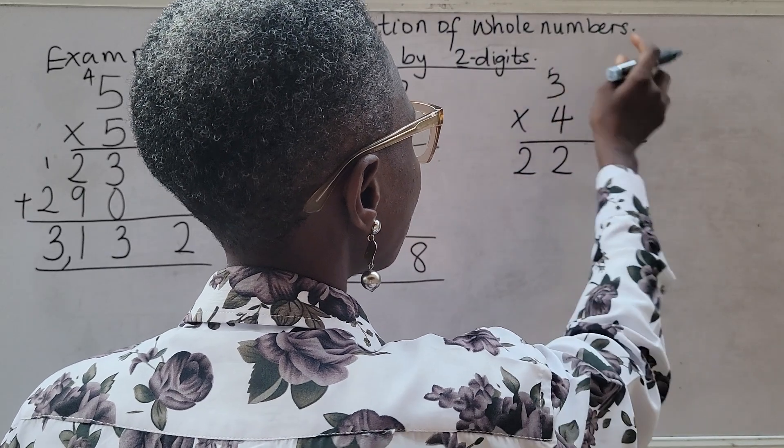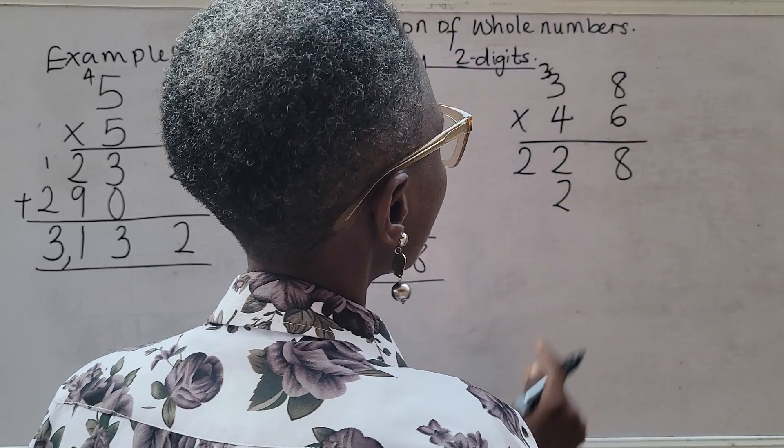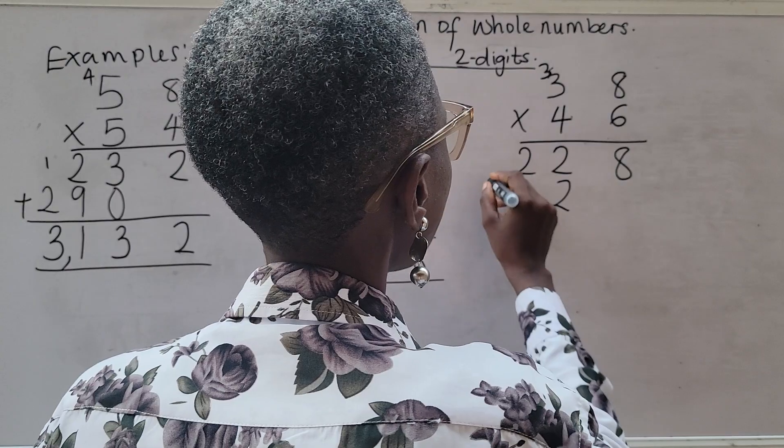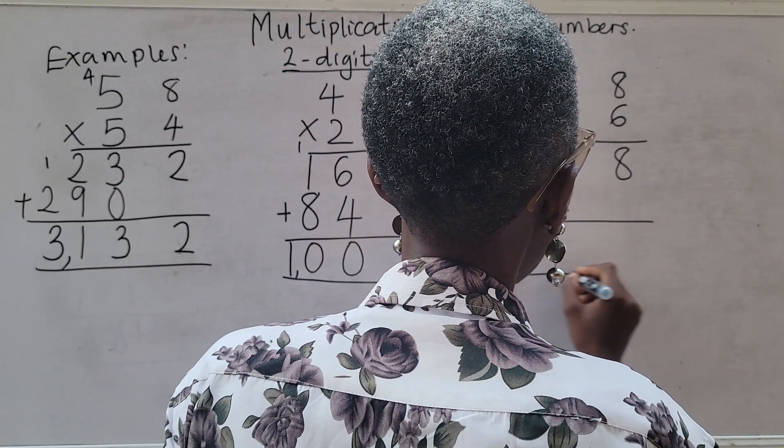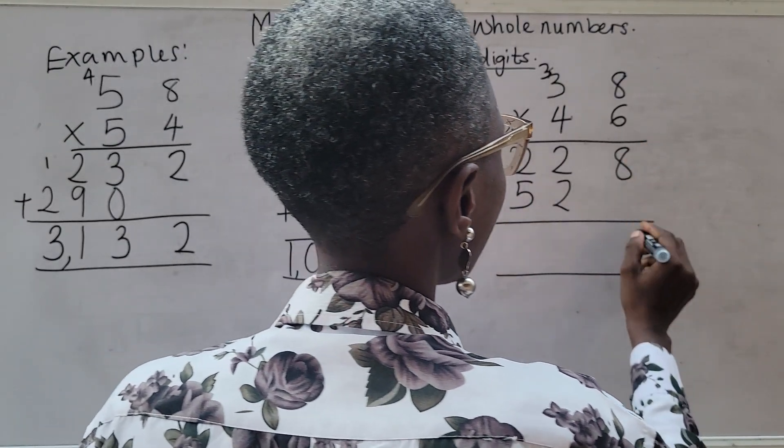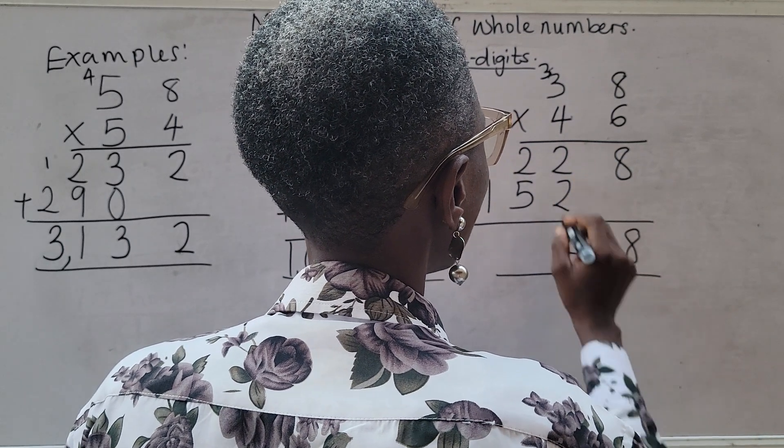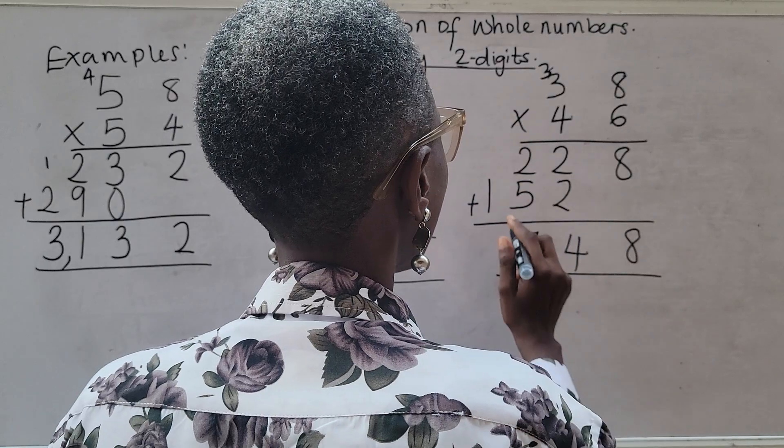Four times eight, don't forget your answer should be written underneath it. So four times eight is 32. You write your three, your two, and bring your three. Four times three is 12 plus three, that's 15. Then you can add up. Eight plus nothing is eight. Two plus two is four. Two plus five is seven. One plus nothing is one. Now my answer to this is 1,748.